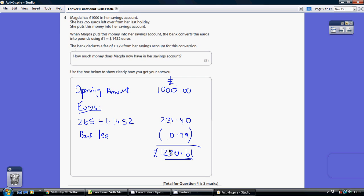So how much we actually get overall in the savings account is going to be the thousand she started with, the euros, but less that 0.79. So 1000 plus 231.40 minus 0.79 gives us £1,230.61.